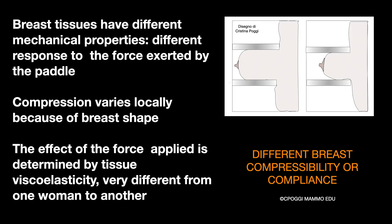The breast tissues have different mechanical properties, and therefore they have a different response to the force exerted by the paddle, which in turn varies locally because of the breast shape. If the breast were homogeneous in structure, compression would simply vary with the size of it. The effect of the force applied is determined by tissue viscoelasticity, which differs from one woman to another. And this is why breasts have a compressibility, or if you like, a compliance, of their own — each of them.